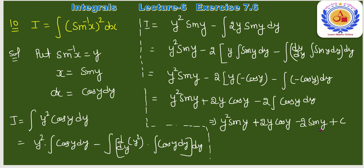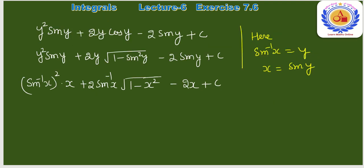अब y = sin⁻¹(x), sin y = x, cos y = √(1 − sin²y) = √(1−x²)। Values replace करके: (sin⁻¹x)²·x + 2·sin⁻¹(x)·√(1−x²) − 2x + C। यही final answer है question number 10 का।